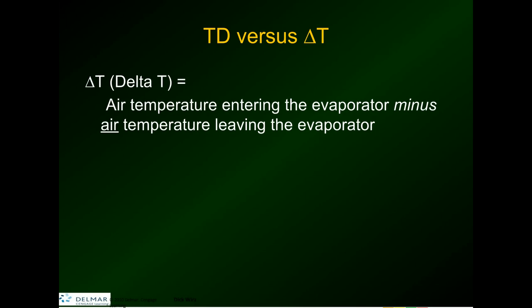Delta T is what we're used to using as air conditioning technicians. To measure that Delta T, you just stick your thermometer in the return air, put another one in the supply air, and find the difference between the two. It's pretty simple — we do it all the time. It's usually about 18 to 20 degrees, and we use that as a rule of thumb just as a quick check to see how the refrigeration system is working.